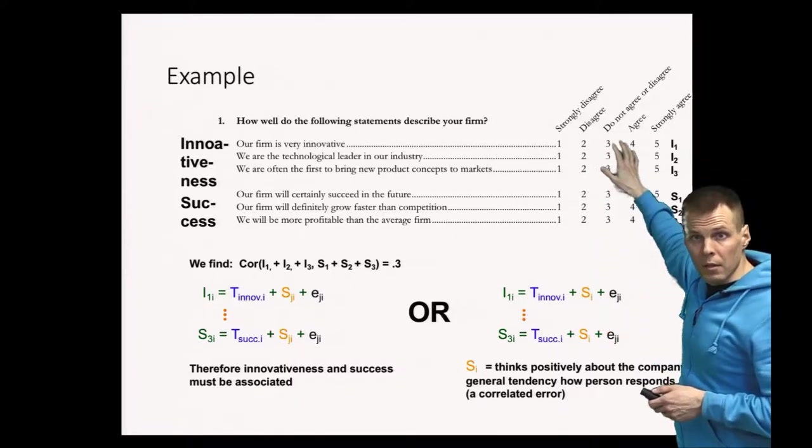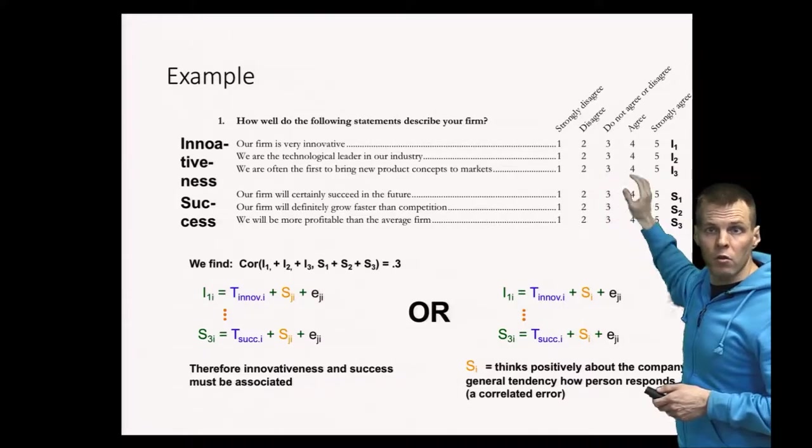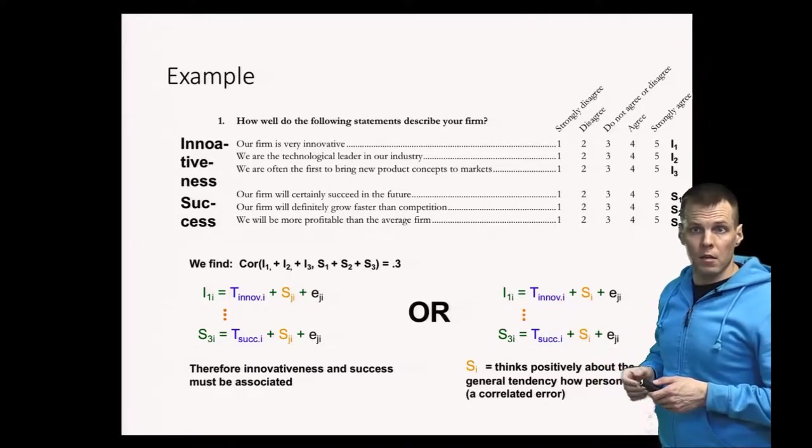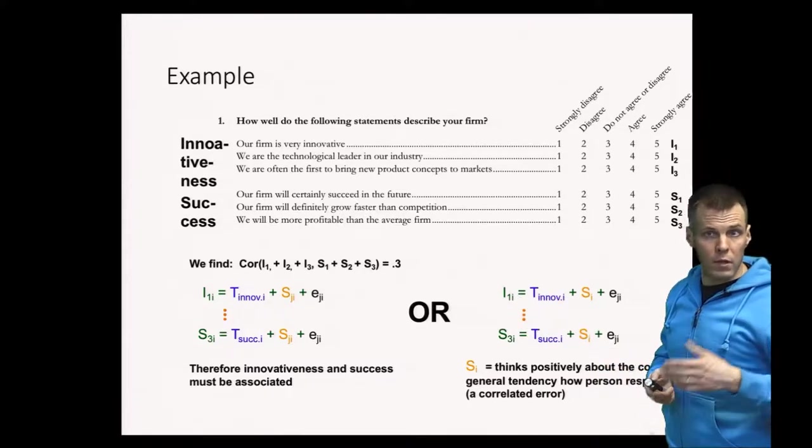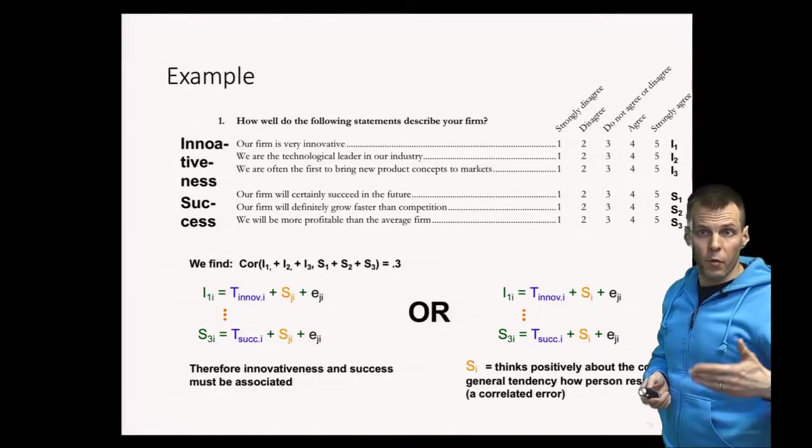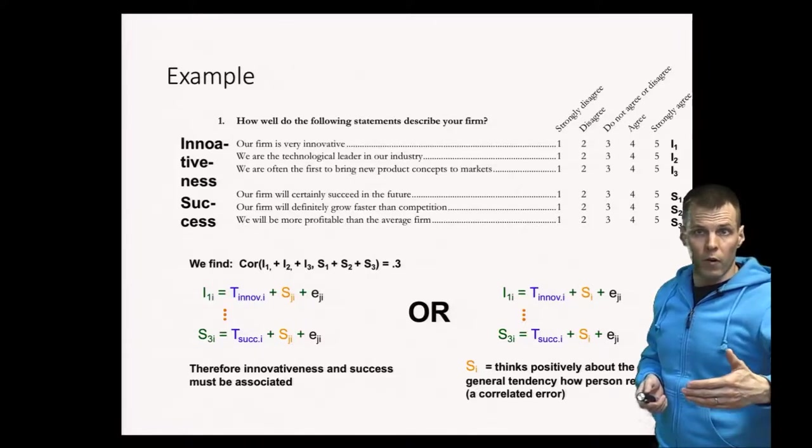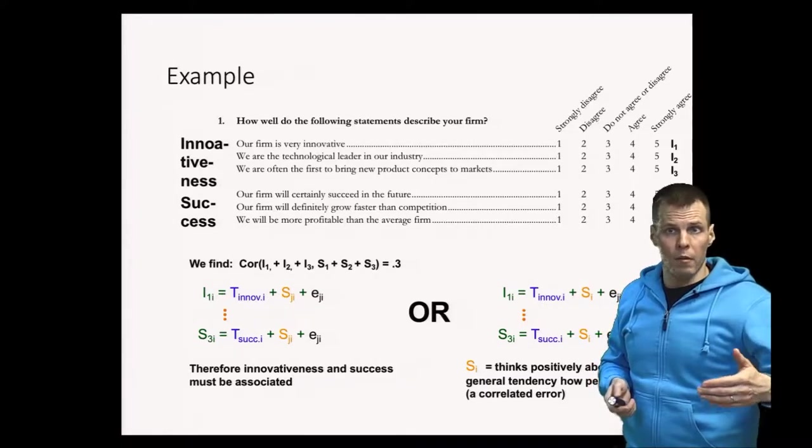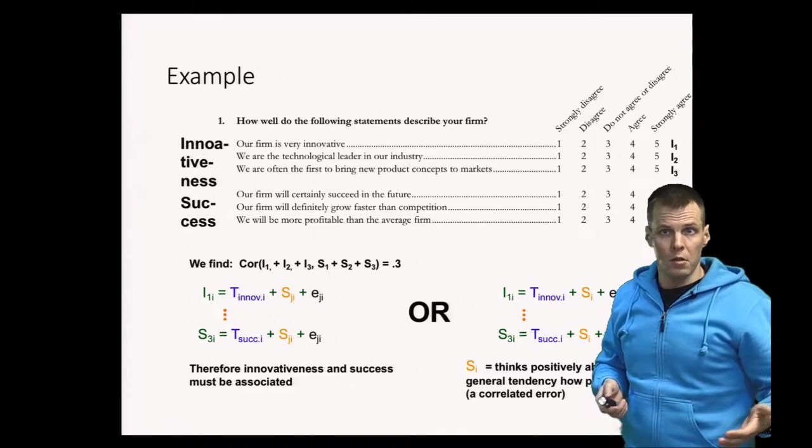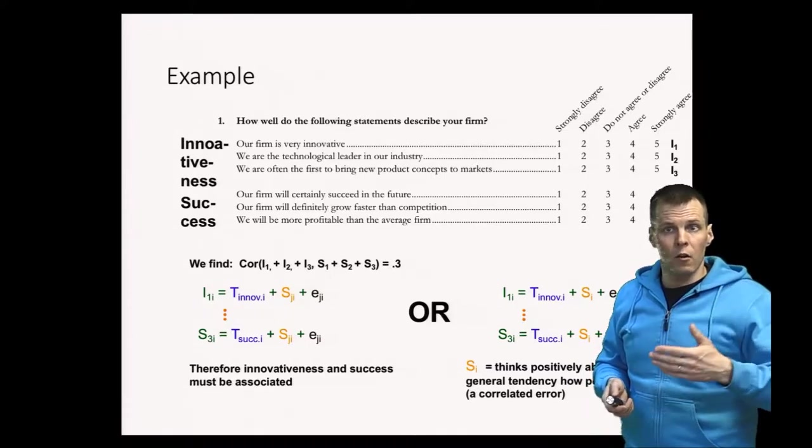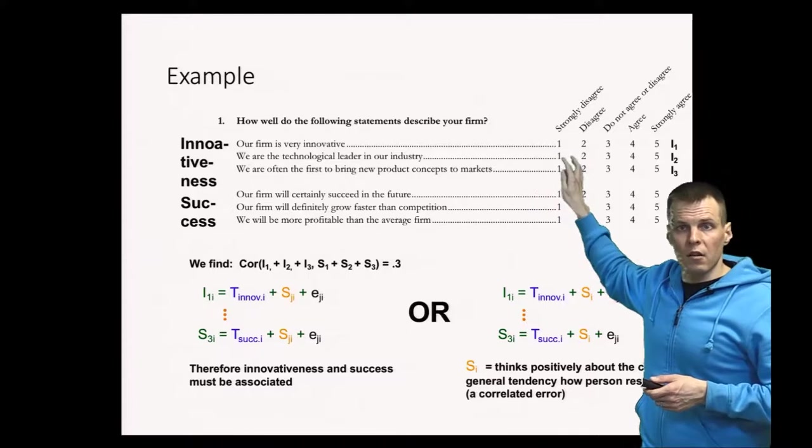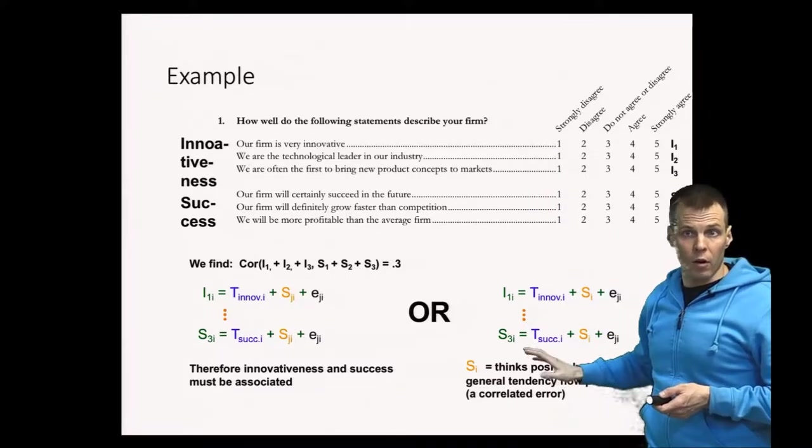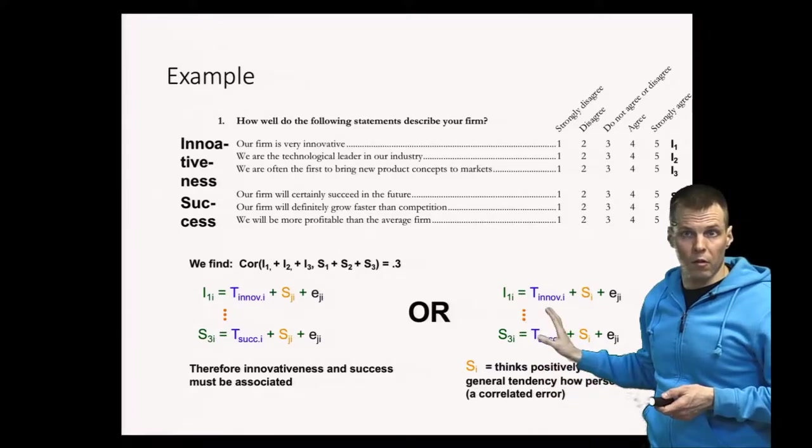We have this systematic measurement error S here, and it influences all these indicators. A skeptic of our study would say that we have not found out that innovation and success are associated. Instead, we have just found out that when we present positive statements of a company to a person, some people will respond systematically higher than others. So instead of being driven by the constructs, these are driven by the general sentiment of the person, and the correlation is not really a reflection of any theoretical relationship.